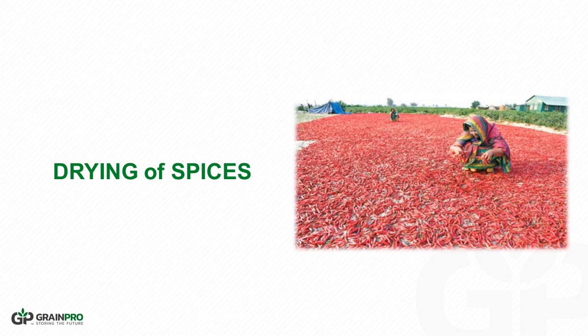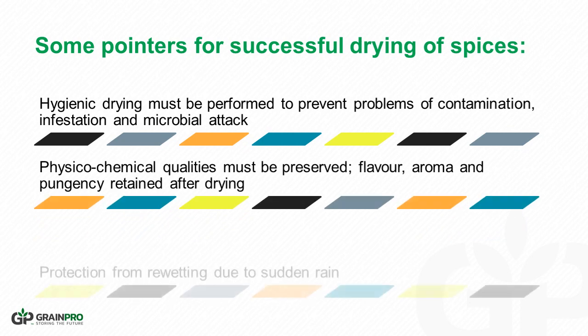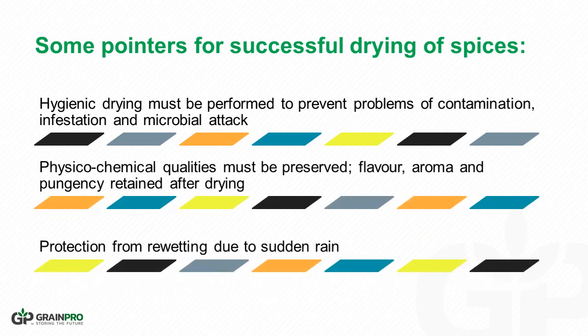Spices are much more sensitive compared to other agricultural produce. Hence, care must be taken when drying them. Improper drying leads to loss of physico-chemical properties of spices such as flavor, aroma, and color. Here are some pointers for successful drying of spices. Drying must always be hygienic to avoid macro and microbiological contamination.